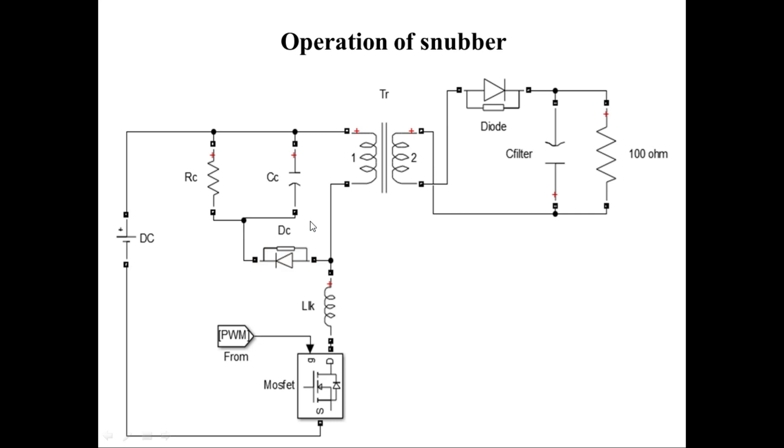RCD-based snubber suffers from a drawback though. The RCD circuit will work even if the voltage stress on the MOSFET is lower than its withstanding capacity. This reduces the efficiency of the power supply as a whole.